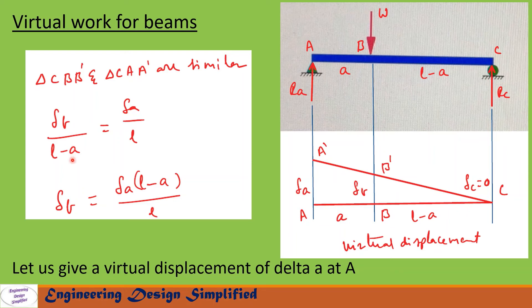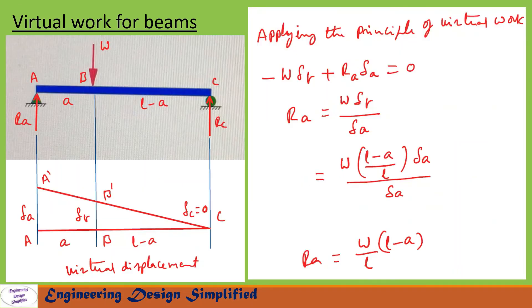From these two similar triangles we can write delta_b divided by (L minus a) equals delta_a divided by L. From this equation we can write delta_b equals delta_a times (L minus a) over L. Delta_c equals zero, and displacement at B is delta_b and displacement at A is delta_a.